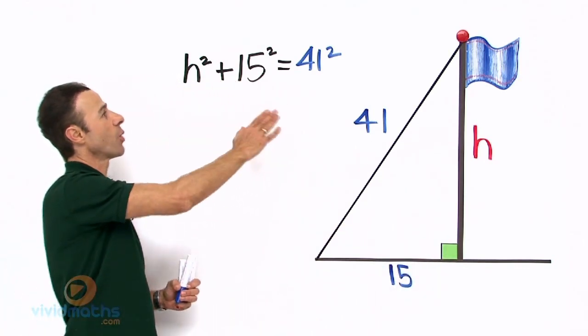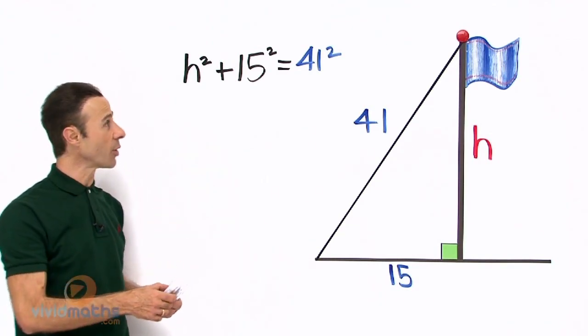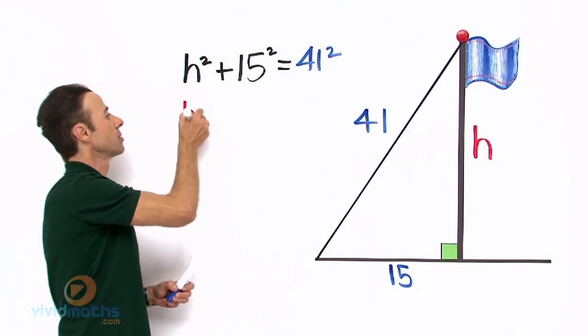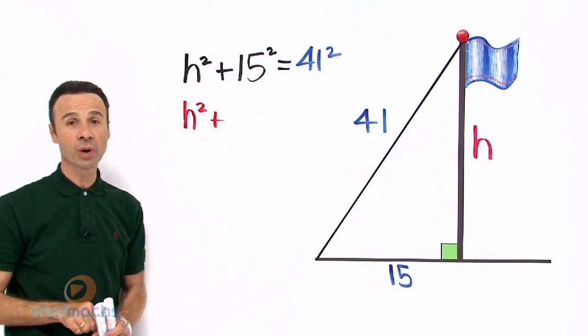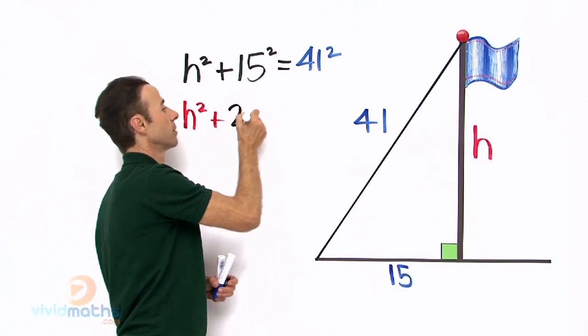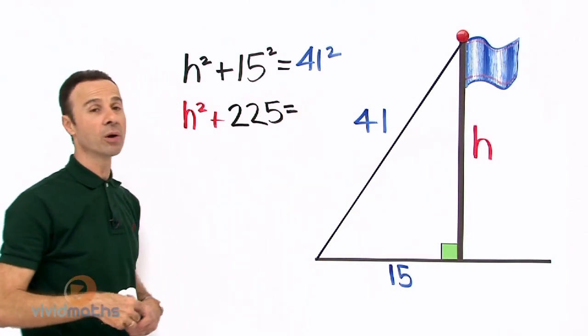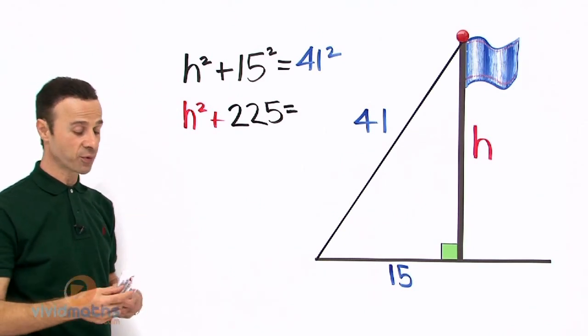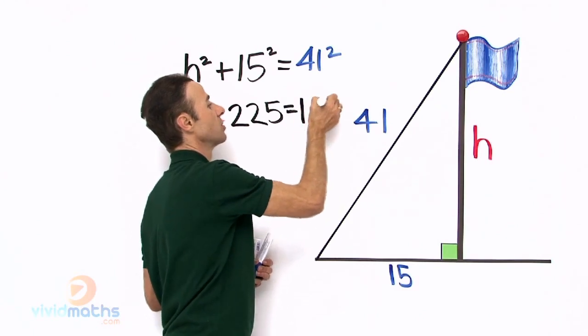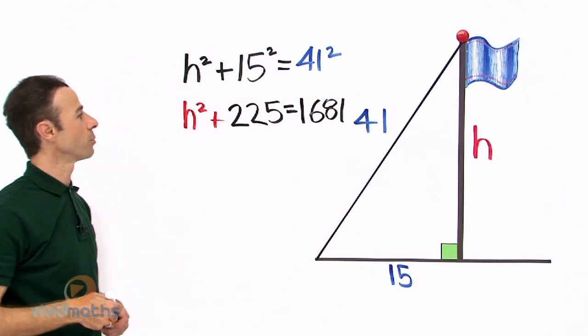So that is our equation, we have pointed, we have checked. Now our mission is to solve it, so let us go ahead and solve it. We are going to have here H squared plus, now 15 squared on the calculator is 225, and that is going to equal 41 squared. Now 41 times 41 gives us a grand total of 1681, so that is a pretty big number there.